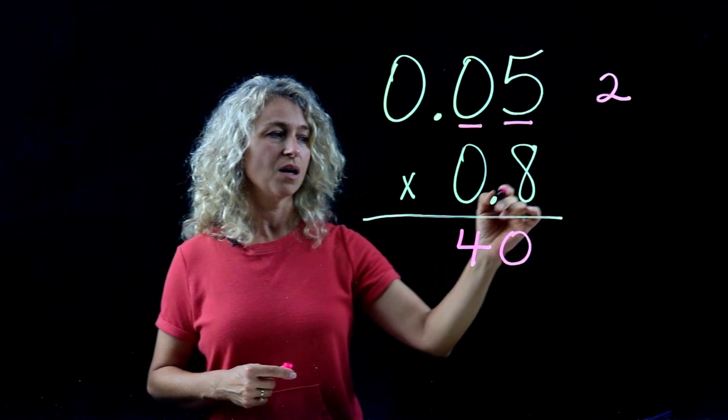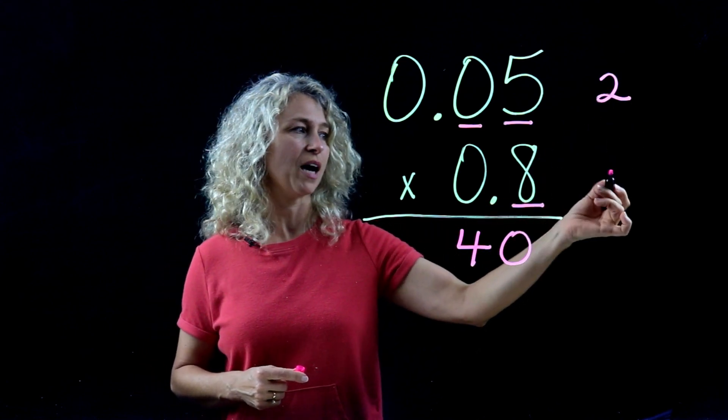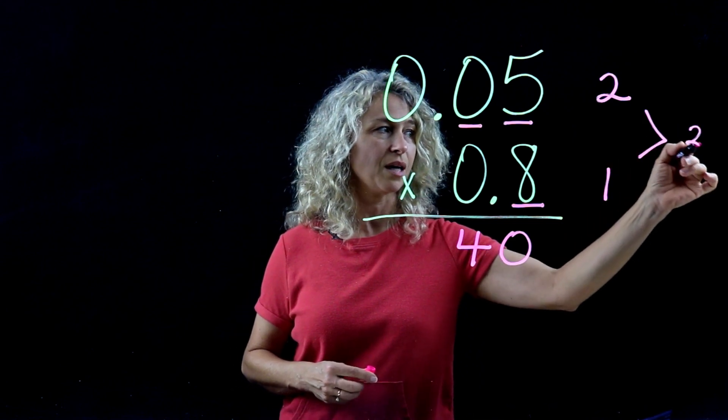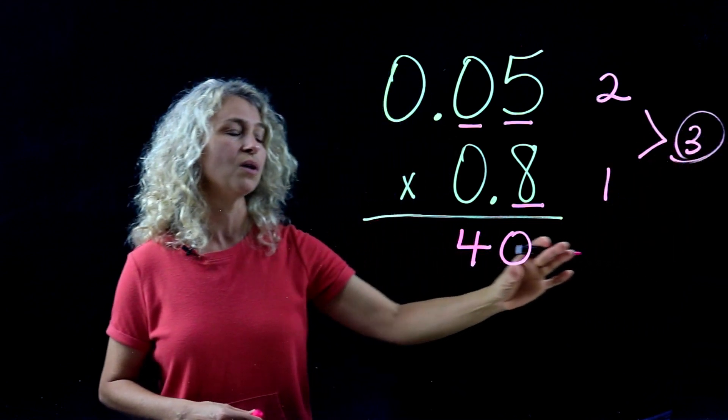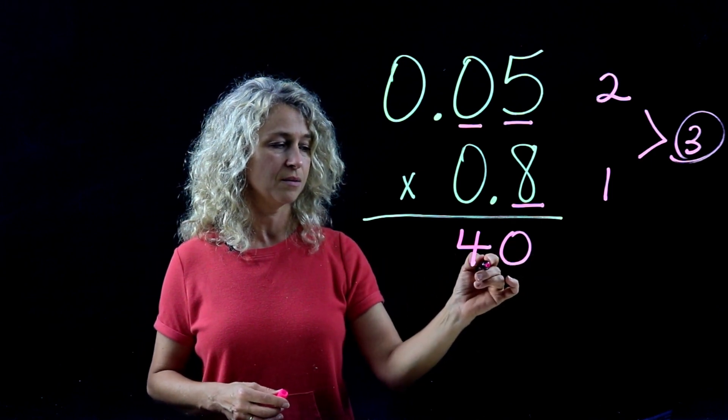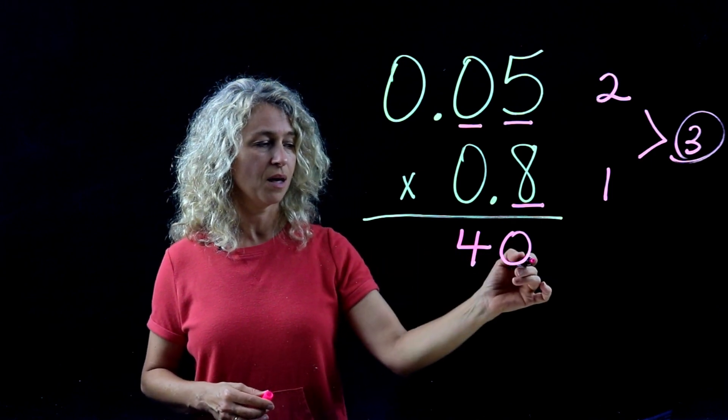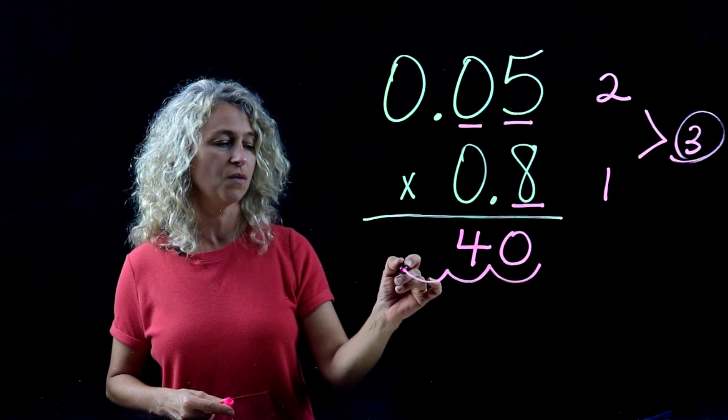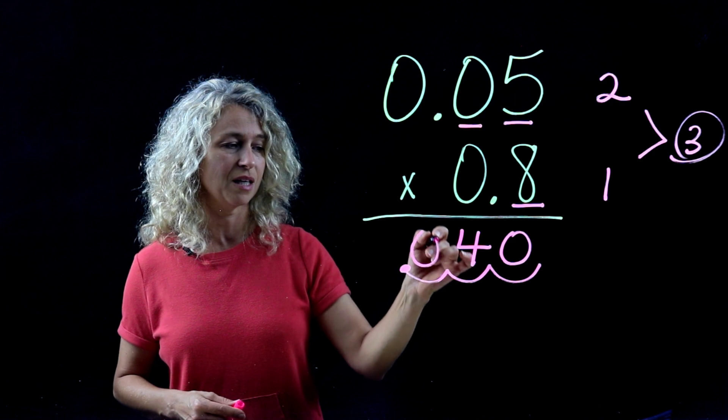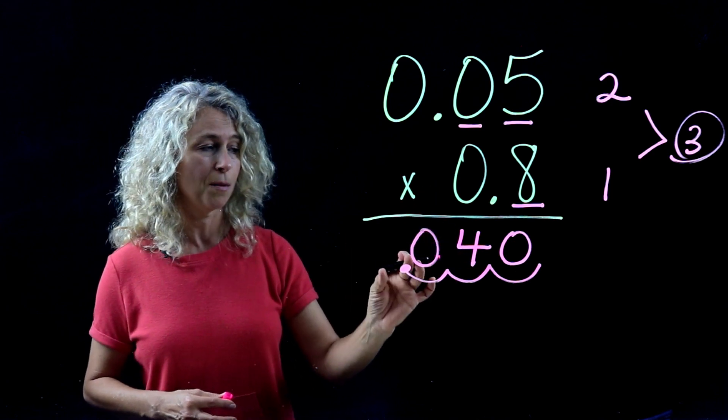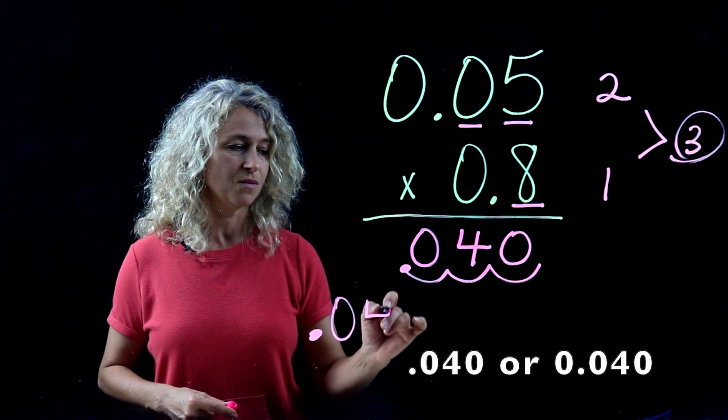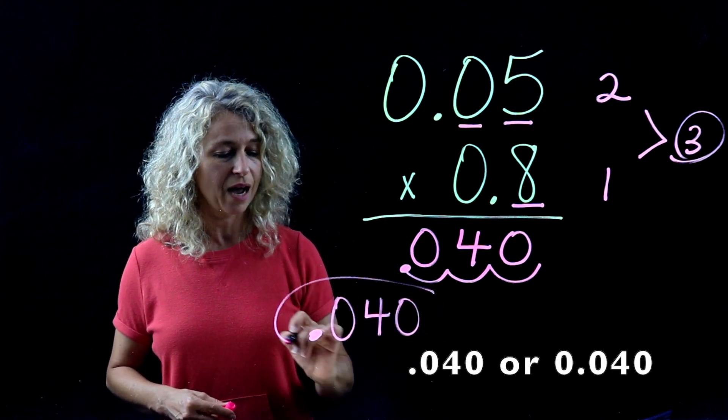And there is 1 for this factor, but a total of 3, so we need a total of 3 decimal places in the product: 1, 2, 3. You can actually show how you're moving the decimal by moving it over this way. Fill in the hole with a 0, so our final answer is 40 thousandths.